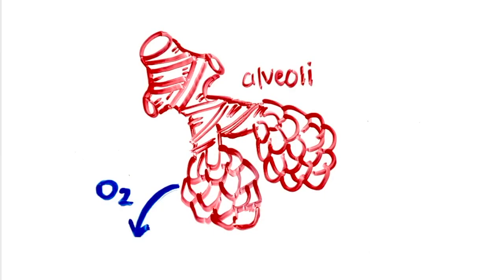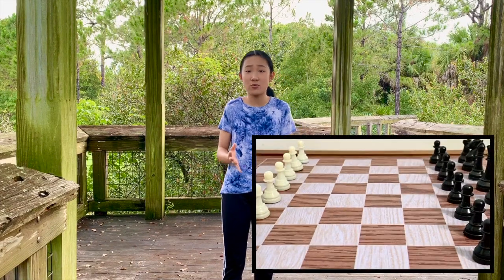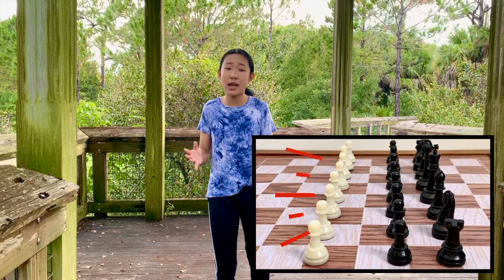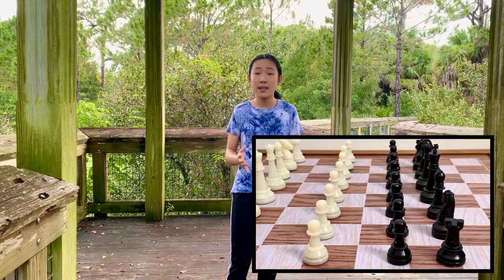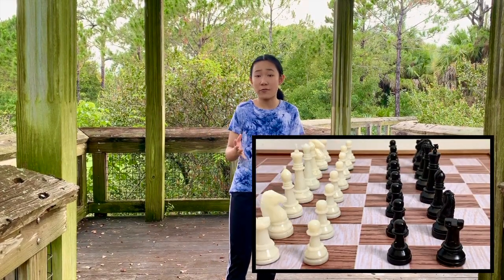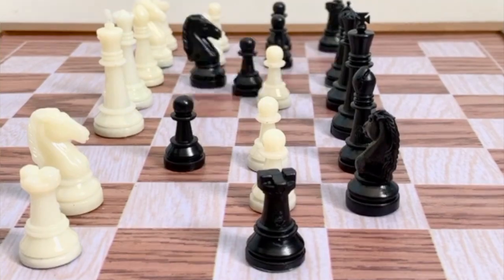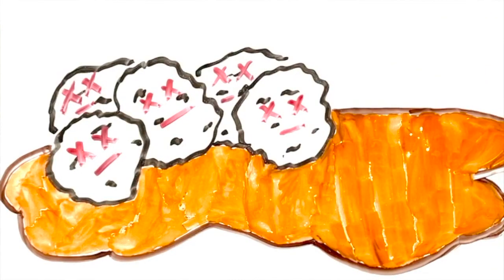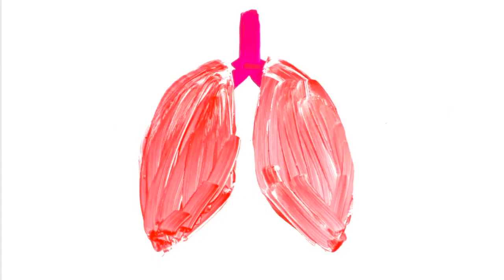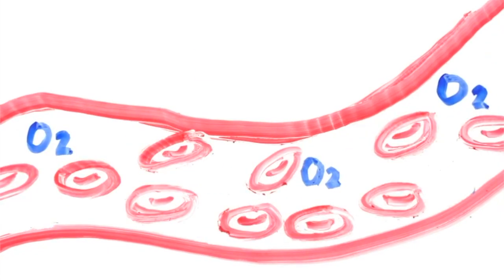Healthy oxygen exchange gets disrupted as immune cells rush to fight the virus. Frontline white blood cells release inflammatory chemicals that summon more immune cells, like ordering reinforcements in a battle. This ongoing response leaves dead cell pus and obstructs normal oxygen exchange, resulting in shortness of breath and low oxygen levels.